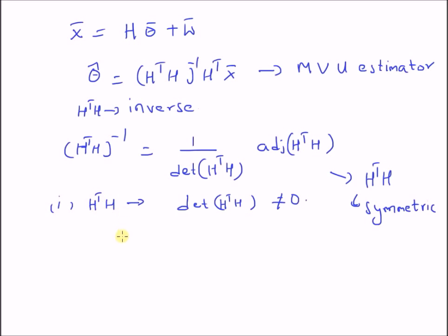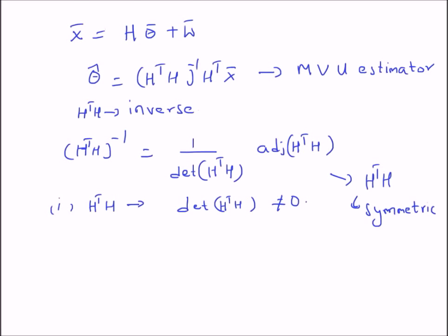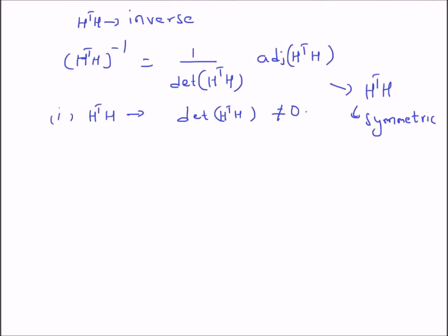The only thing we have to check is whether the determinant of H^T H is zero or non-zero. We want to look at conditions under which the determinant is zero and conditions under which it is non-zero. Let matrix A equal the product H^T H.